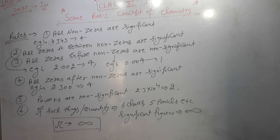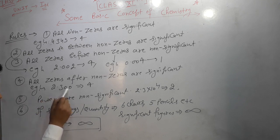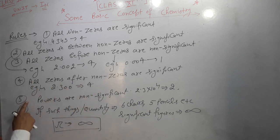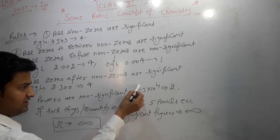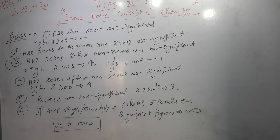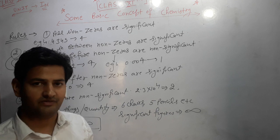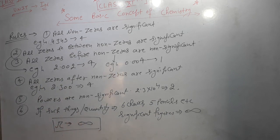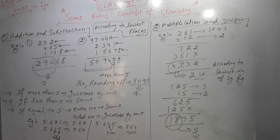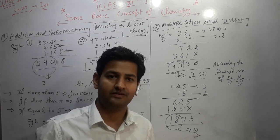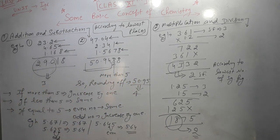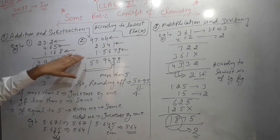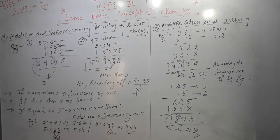Rule 3: all zeros before non-zero digits are not significant. Example: 0.004 has only one significant figure. Rule 4: all zeros after a non-zero digit (trailing zeros) are significant. Example: 2.300 has four significant figures. Rule 5: the power of 10 in scientific notation is not significant — only the coefficient digits count.